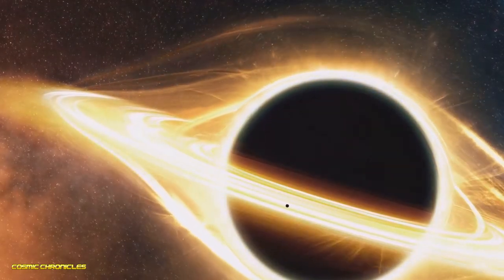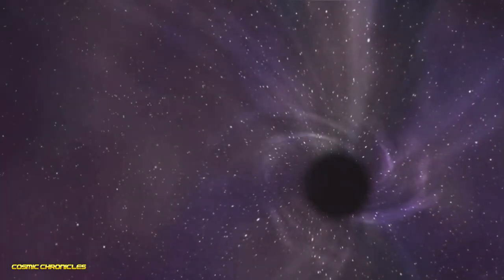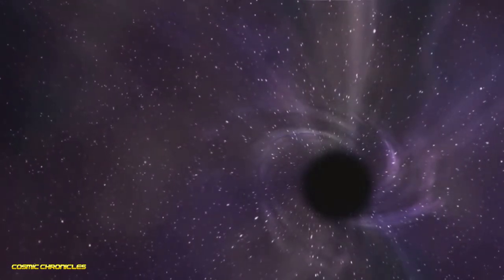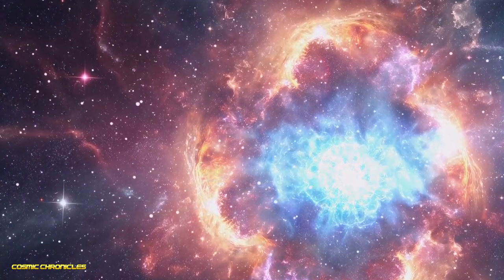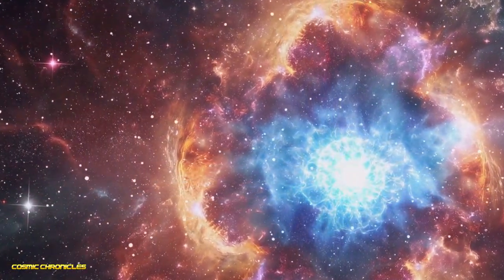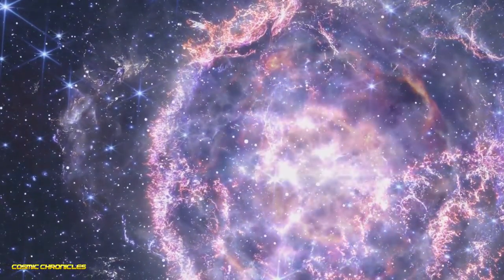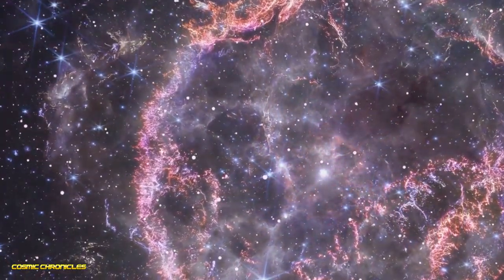This makes them invisible to the naked eye, detectable only through their interaction with surrounding matter and the bending of light. These celestial objects are formed when massive stars collapse at the end of their life cycles. The process is both violent and spectacular, often resulting in a supernova explosion that outshines entire galaxies for a brief period.